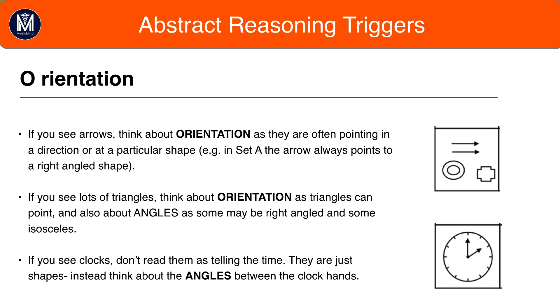Alternatively they could be pointing at a particular shape, for example in set A the arrow could always point to a right angle shape whereas in set B the arrow could always point to an isosceles shape.